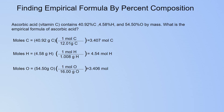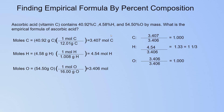After this, you have to observe which value is the lowest number of moles. In this case it would be oxygen with 3.406 moles. You then take each number of moles and divide them by that lowest value. For carbon, 3.407 divided by 3.406 gives about 1. For hydrogen, 4.54 divided by 3.406 gives about 1.33, which is about one and one-third. For oxygen, 3.406 divided by 3.406 is exactly 1.